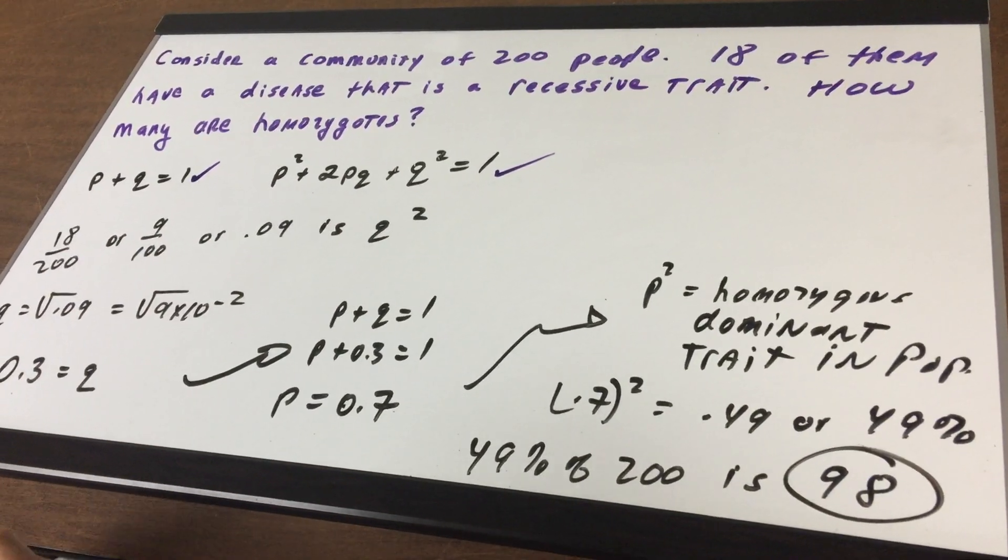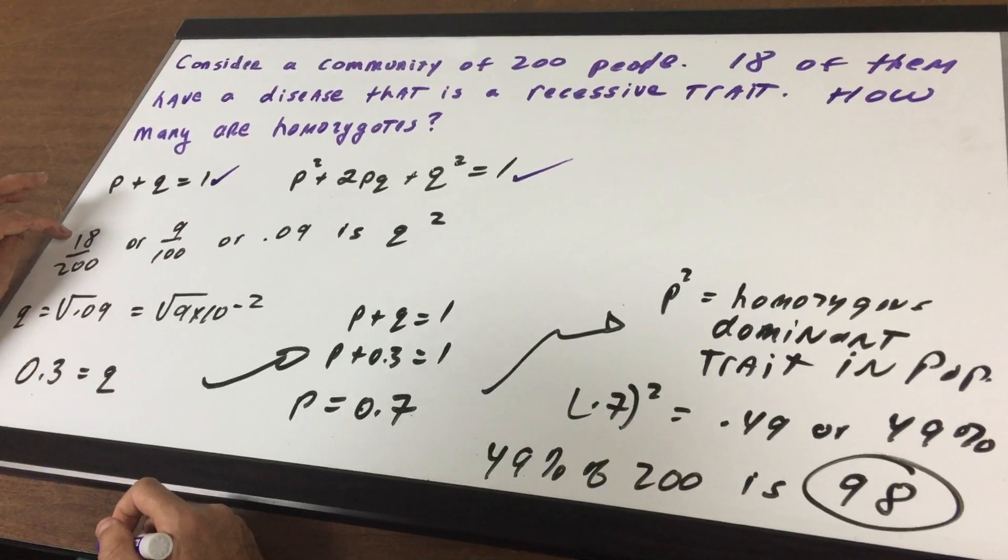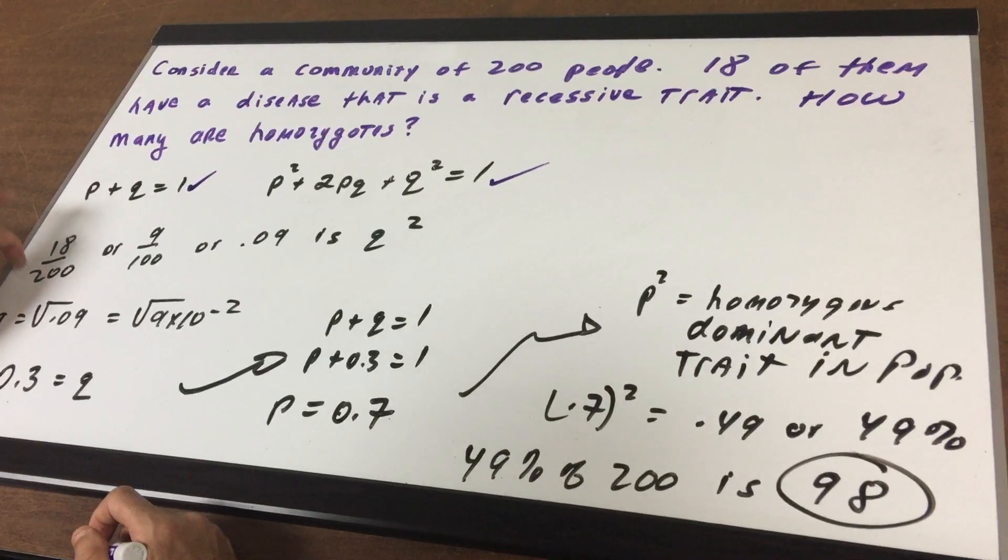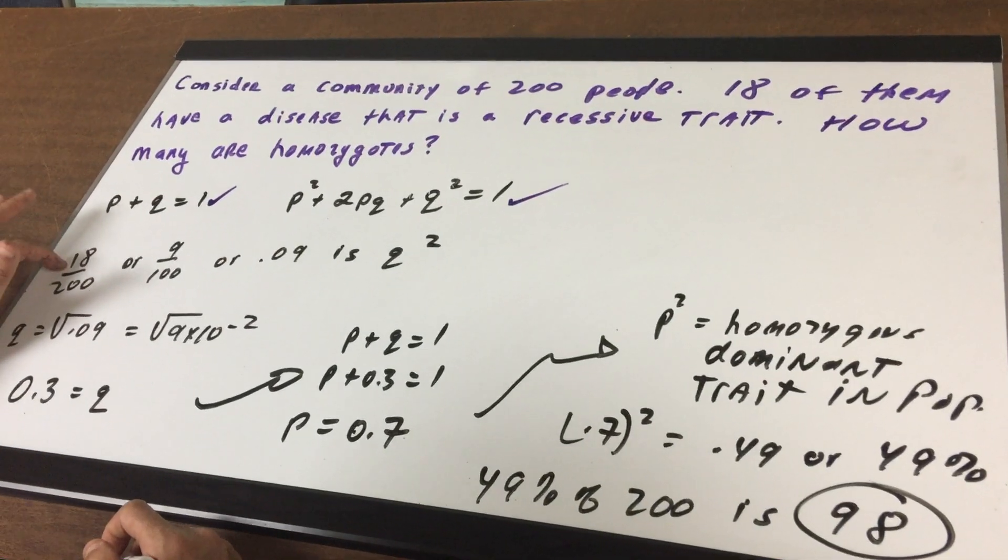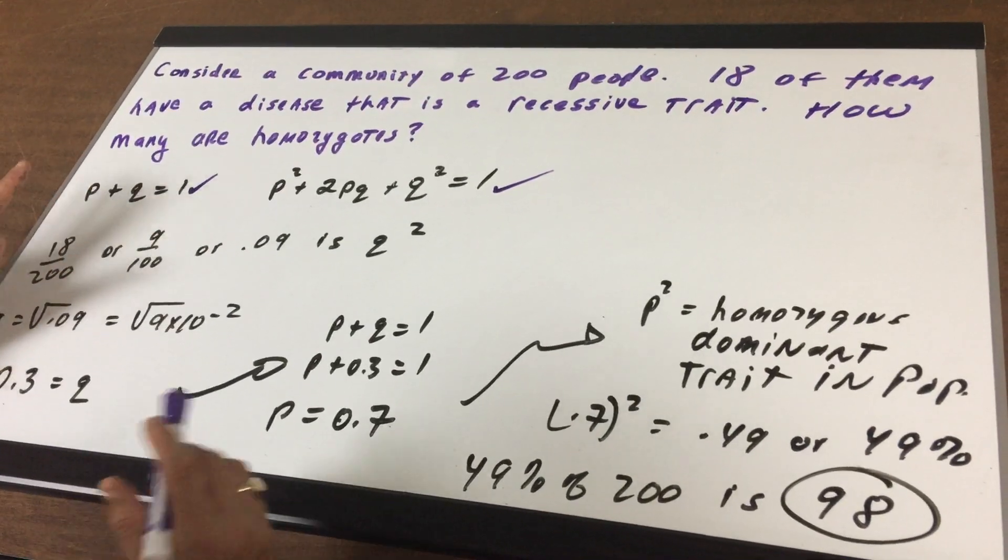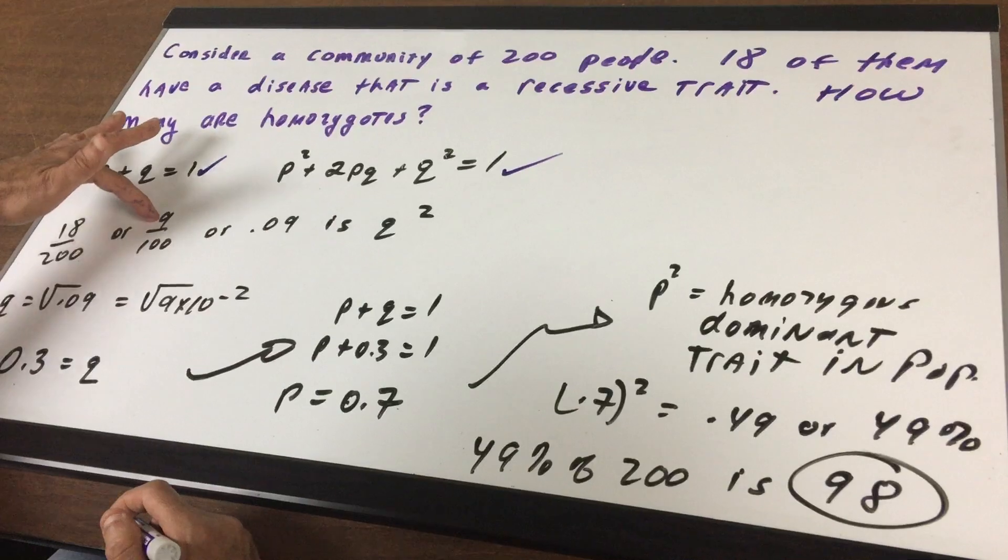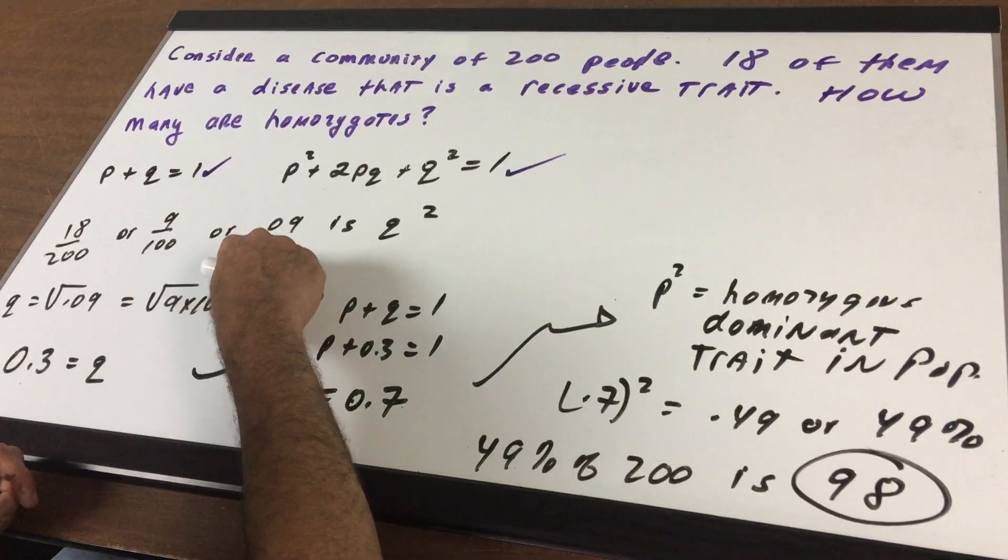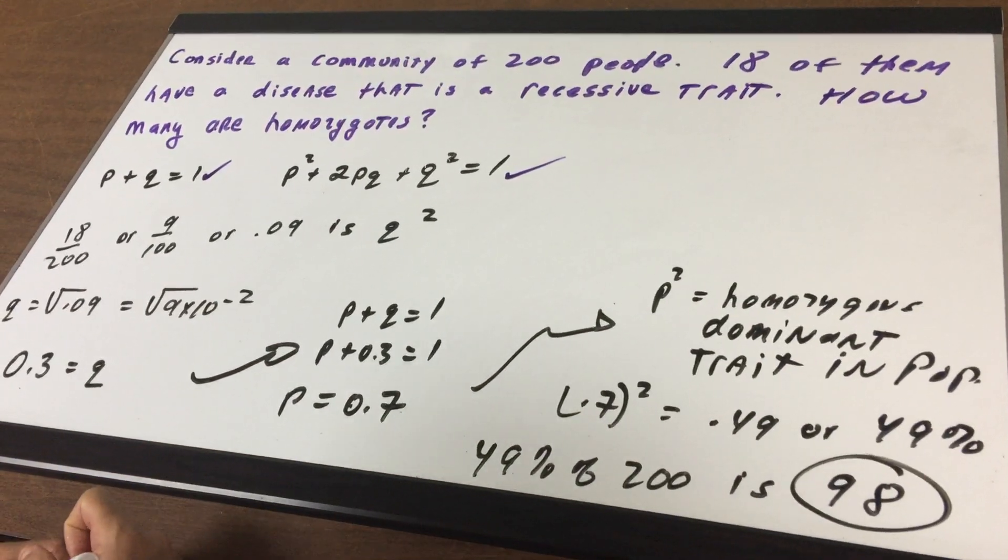Now we want the homozygotes but we want the number. So the first thing I'm going to do is we know that 18 out of the 200 represent the recessive trait. That's going to represent the Q squared term. Now 18 over the 200 is the same as 9 over 100 or 0.09. So that 0.09 represents Q squared.